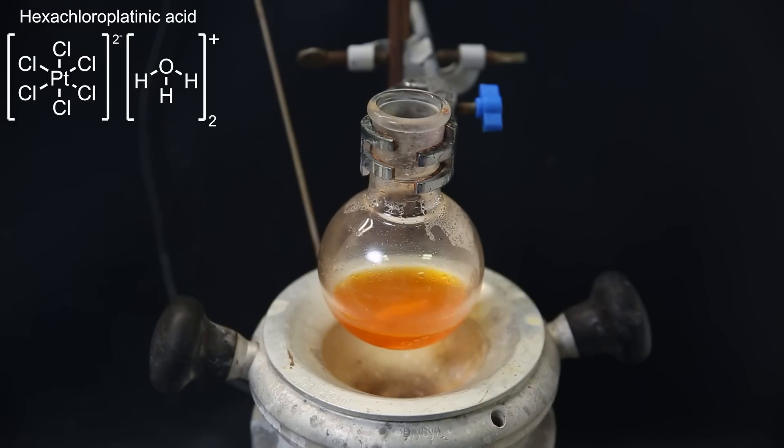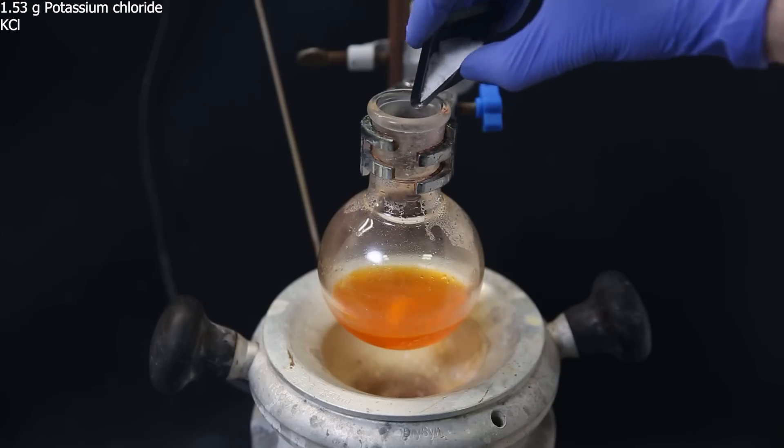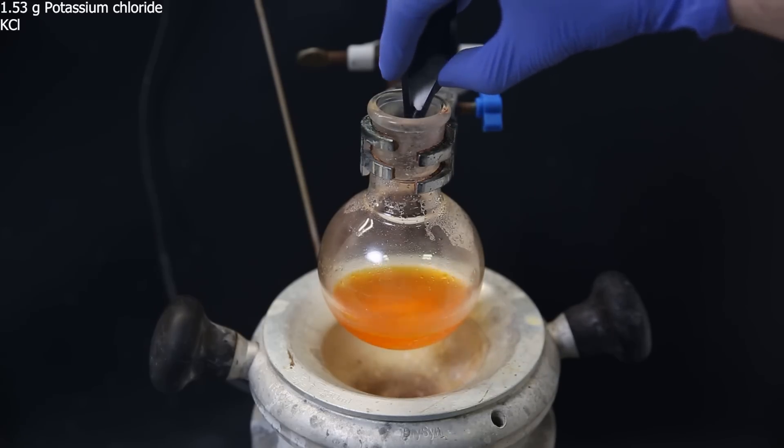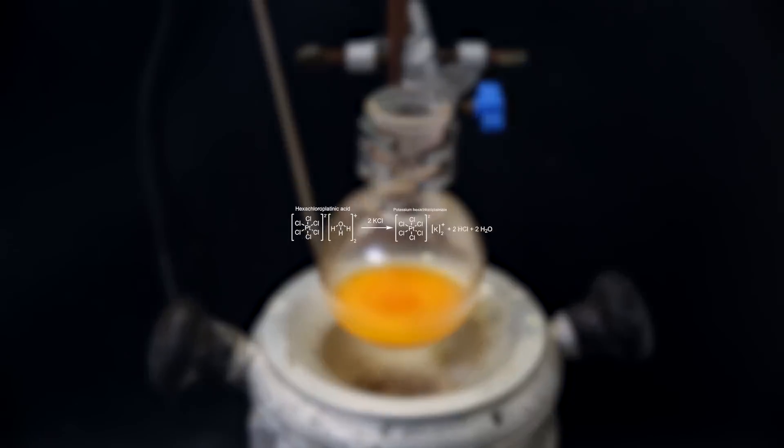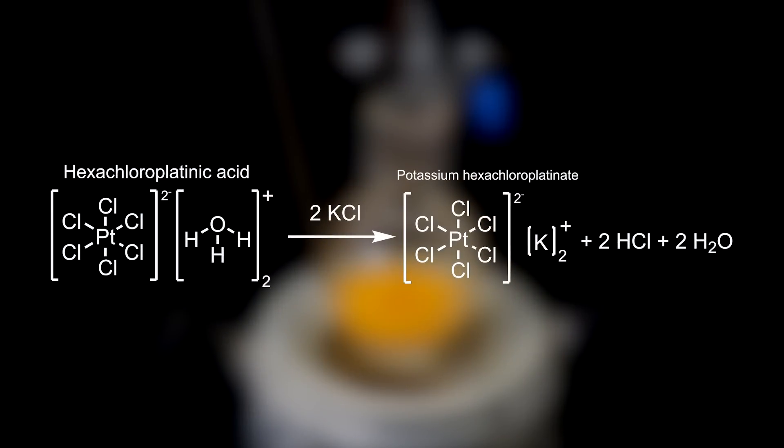Now for the next reaction, to the hexachloroplatinic acid solution, I add 1.53 grams of potassium chloride, which immediately reacts to form a yellow product. In this reaction, the hydronium ions are displaced by potassium ions to form the yellow insoluble potassium hexachloroplatinate, which precipitates out of solution.